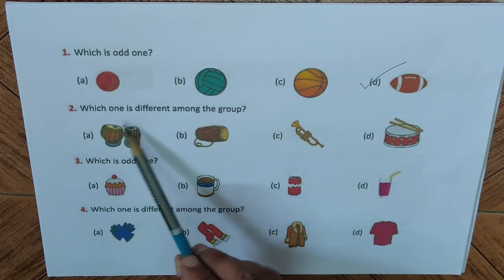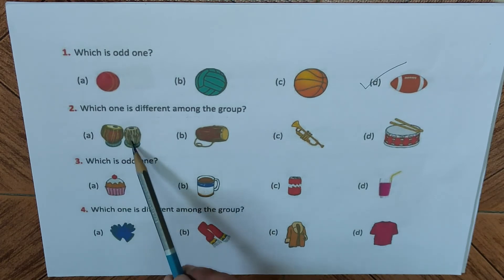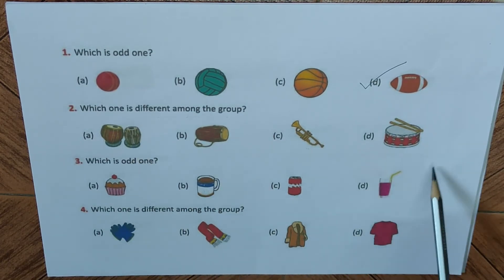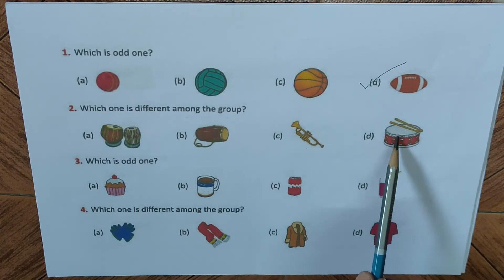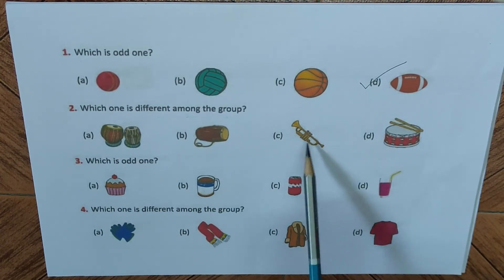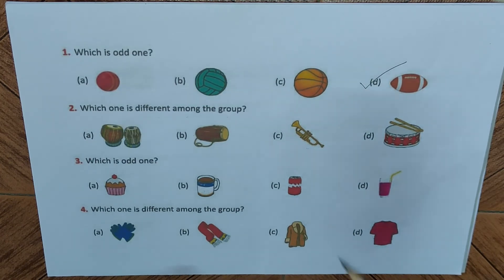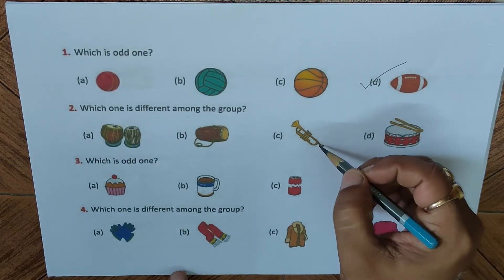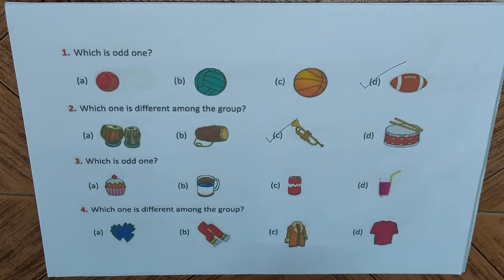Question two: which one is different? We have a tabla, a doll, a trumpet, and a drum. Options A, B, and D can be played with hands, but the trumpet requires blowing air — you need your mouth to make sound. So answer C, the trumpet, is different.